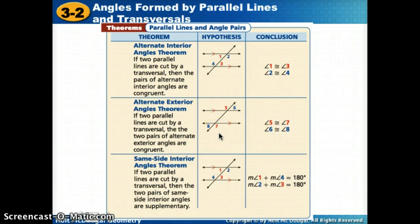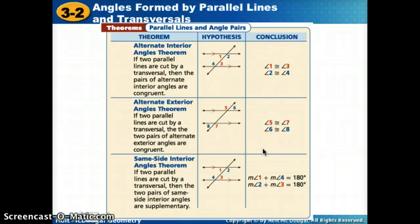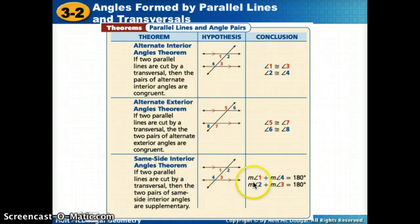The one that's different — and we have to remember this — is same-side interior angles. Those cannot be congruent: angle 1 is acute and angle 4 is obtuse, so they can't be the same. Same-side interior angles are supplementary, meaning they add up to 180 degrees when two parallel lines are cut by a transversal. Make sure you get all of these written down.